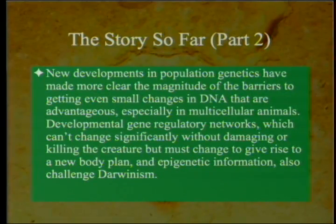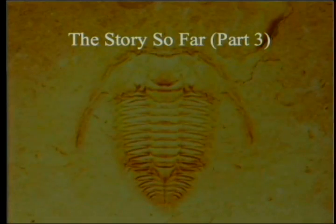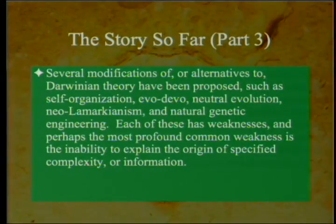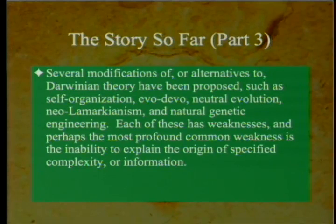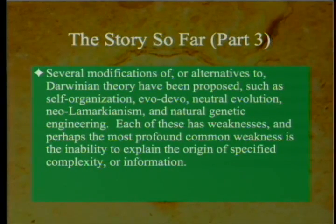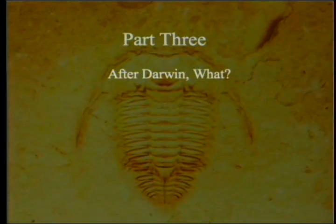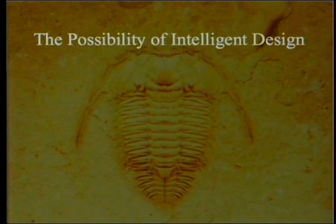Epigenetic information also challenges Darwinism. In Part Three, several modifications of or alternatives to Darwinian theory have been proposed: self-organization, evo-devo, neutral evolution, neo-Lamarckianism, and natural genetic engineering. Each has weaknesses, and perhaps the most profound common weakness is the inability to explain the origin of specified complexity or information. And so we come to Part Three, 'After Darwin, What,' and the possibility of intelligent design.